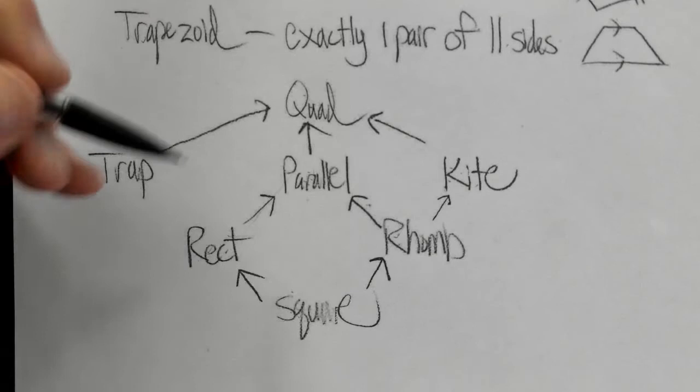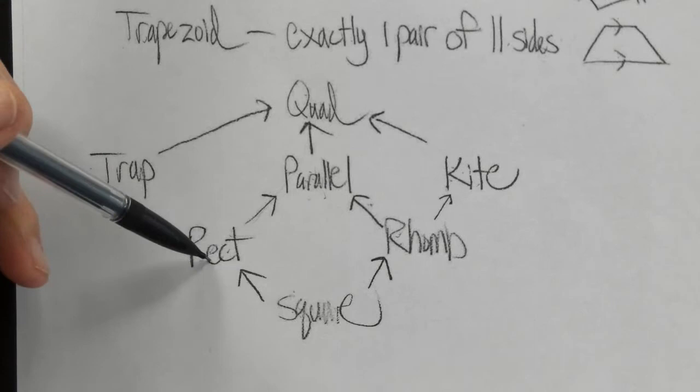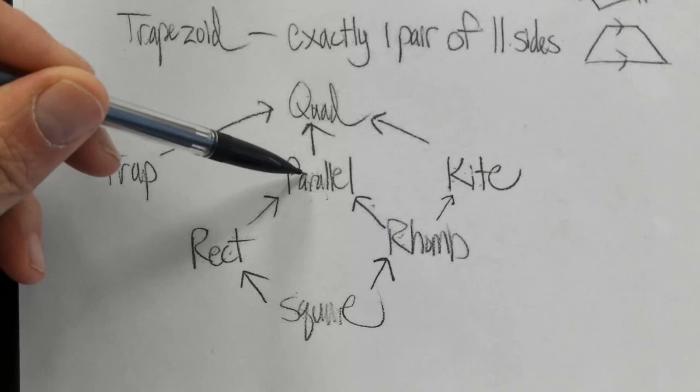Remember, it can't go down the arrows. So a statement like 'all parallelograms are rectangles' — no. But 'all rectangles are parallelograms' — yes. That's how you read the chart.